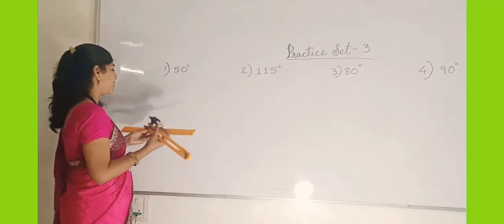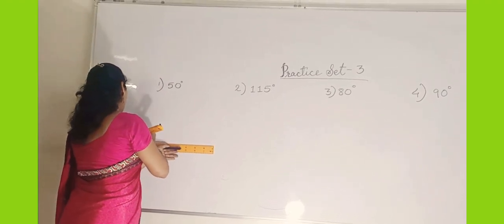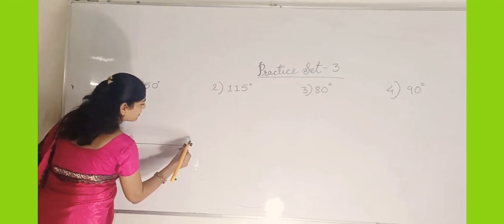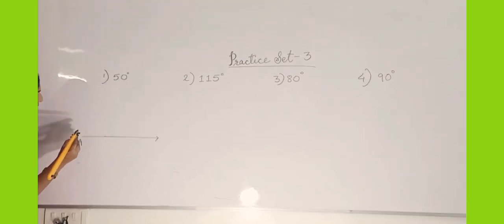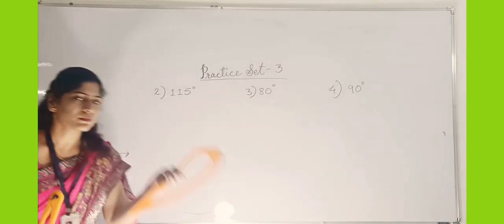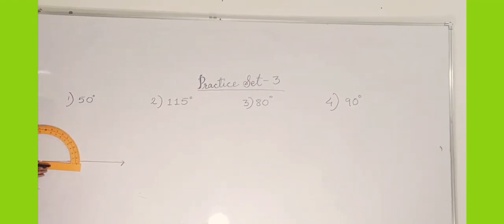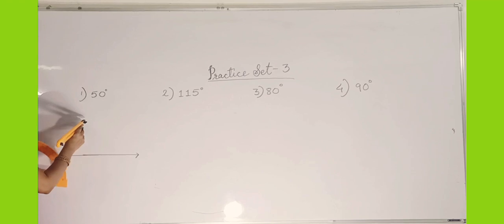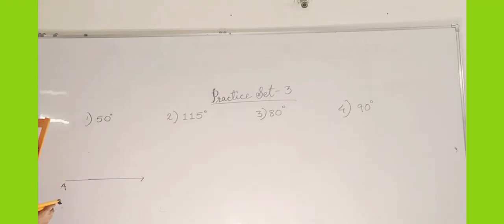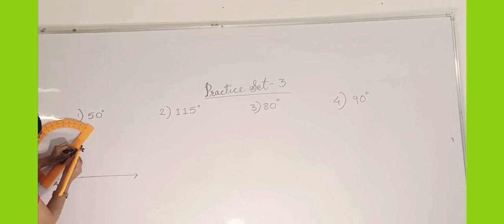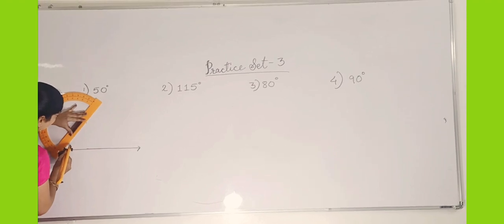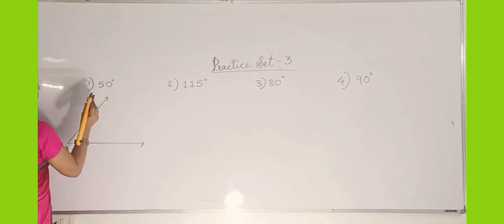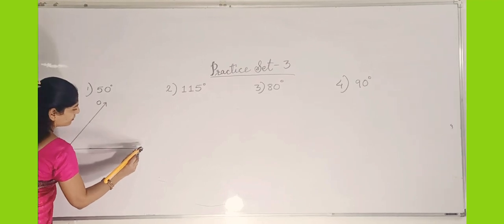For this, what we will do first — we will take one ray. You can give the name to this ray; you can give that point as A. Take the protractor. Place the midpoint on the end point of the ray. Take 50 degrees. Then we have to draw — we have taken the point over here. You can take the scale or the protractor to draw a line from the endpoint through the 50-degree point. So you can name this angle as OAB.